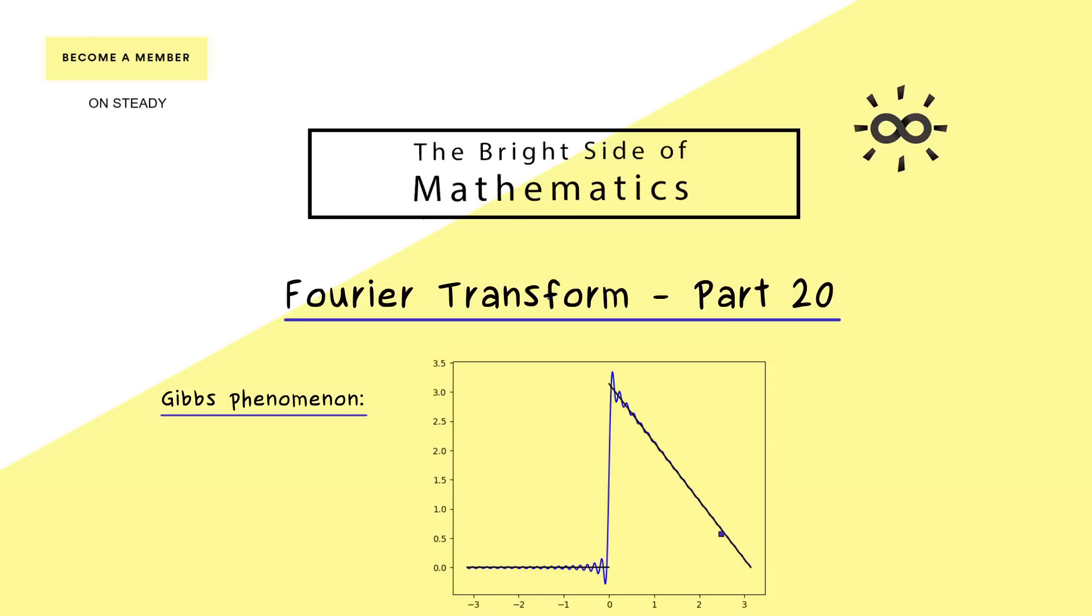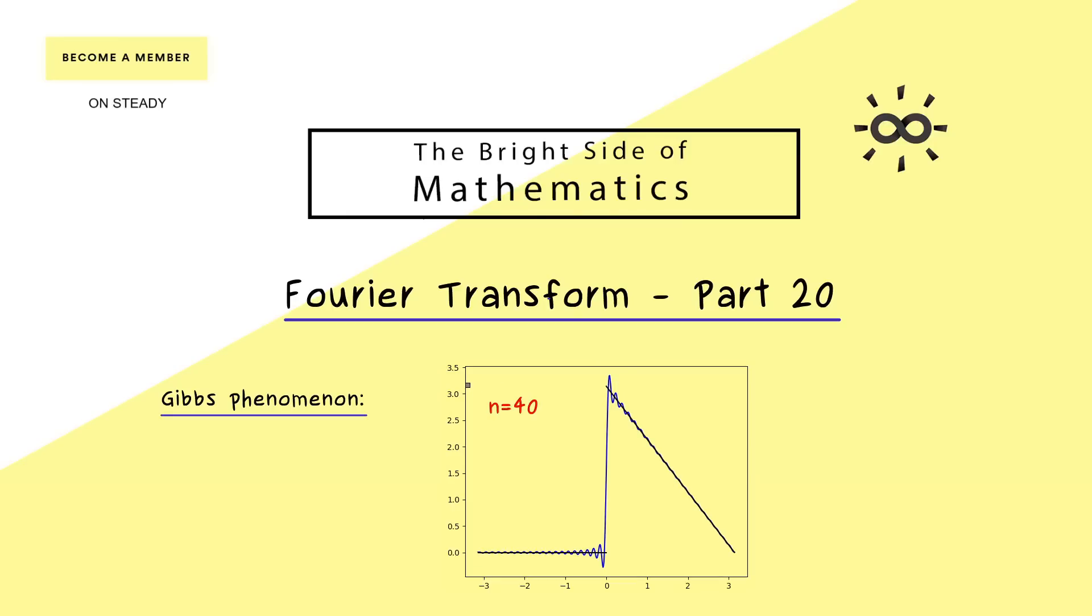So for example, if we go to 40 terms, we already see we are really close to our original function. However, strangely enough, this is not correct for points that are close to the jump point. There we see a big gap still. And now we might expect that this overshooting we see gets smaller and smaller when we increase our n. Therefore, let's look at a larger n here on the right hand side. For example, we could go to n equals 100 and then we see we have a nice pointwise convergence. But we also recognize that this overshooting is still there and it's exactly of the same amount as before.